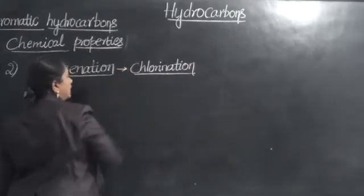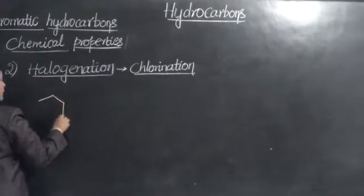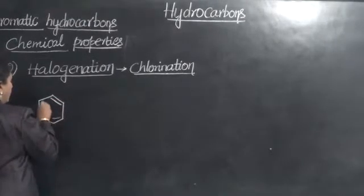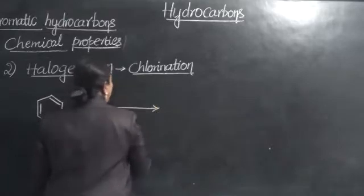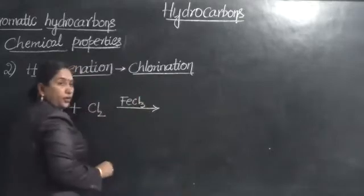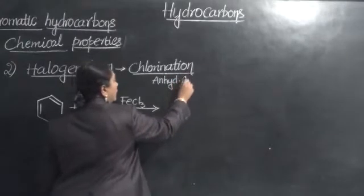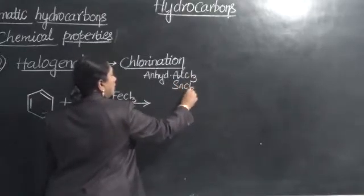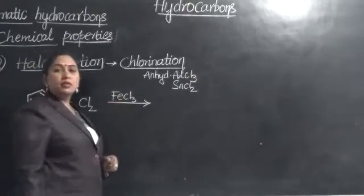So chlorination is an example of halogenation. Benzene is treated with chlorine in presence of halogen carriers like FeCl3. Instead of this, we can also make use of anhydrous aluminium chloride or tin chloride or FeCl3. Any of the Lewis acids will act as our halogen carrier.